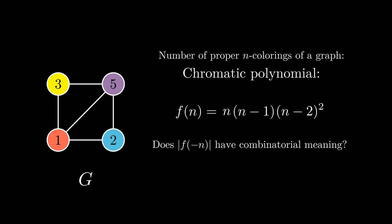Chromatic polynomials give us a sneaky way to count acyclic orientations, and flow polynomials give us a sneaky way to count totally cyclic orientations. Both are pretty easy to compute algorithmically, and in fact chromatic polynomials and flow polynomials are intimately connected for a variety of beautiful reasons — but we will leave that subject for another video.